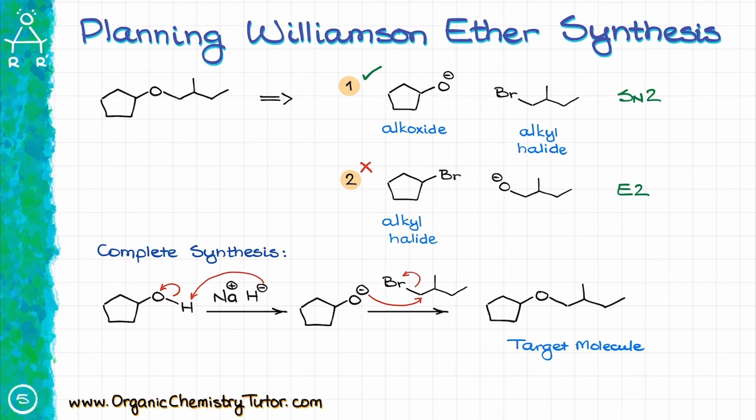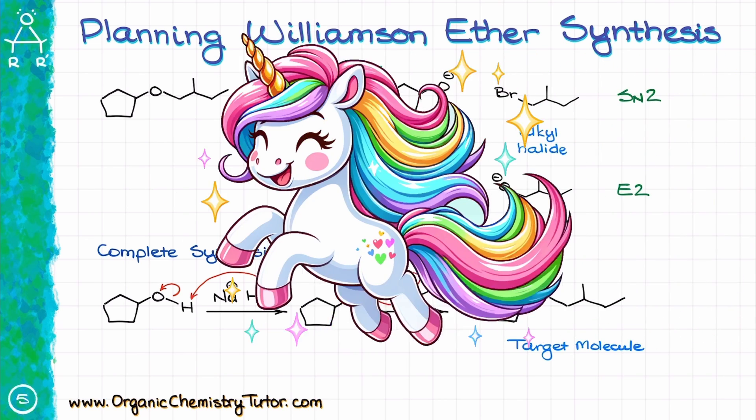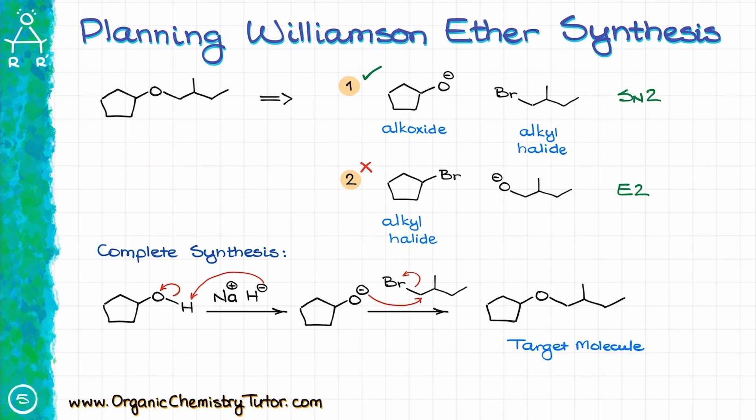So, as you can see, the underlying principle is quite simple. Break your molecule into pieces, see which pair will be able to go through the SN2 reaction, and pick that one. Now, just as soon as you relax and think it's all rainbows and unicorns, I'm gonna throw a curveball at you.